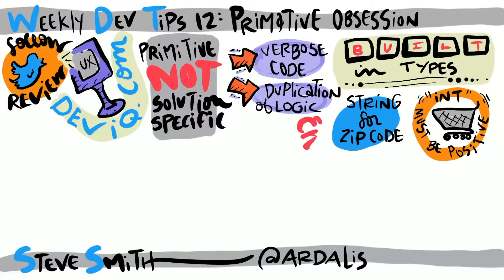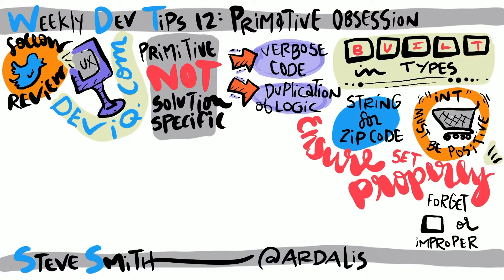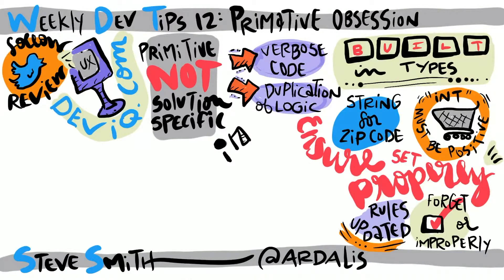Ideally, the shopping basket or basket item type would enforce this, but in many designs, the shopping basket item quantity is simply a property that can be set to anything. In which case, any service, UI call, etc. that manipulates a basket item would first need to ensure that it was being set properly. This can result in a great deal of duplicate code with the usual technical debt that arises when you violate the don't-repeat-yourself principle. In some places, someone will forget to perform the checks or they'll perform them differently and bugs will creep in, or the rules will be updated over time, but not everywhere, which results in the same inconsistent behavior.